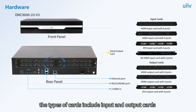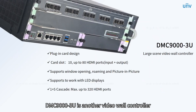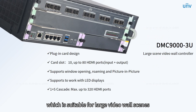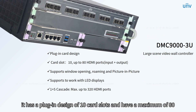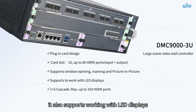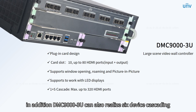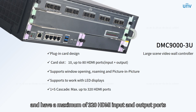The types of cards include input and output cards; 2, 4, or 8-port HDMI and DVI board cards are optional. The DMC-9003U is another video wall controller suitable for large video wall scenes. It has a plug-in design of 10 card slots with a maximum of 80 ports of input and output, supports working with LED displays, and can realize window roaming and picture-in-picture splicing. Additionally, DMC-9003U can realize six-device cascading with a maximum of 320 HDMI input and output ports.